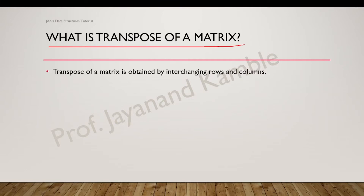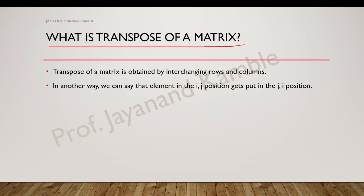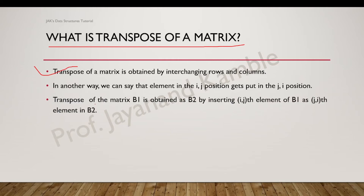Before that we must understand what is meant by the transpose of a matrix. A transpose is obtained by interchanging rows and columns. In other words, the element at position i,j gets placed at position j,i in the transpose. So rows and columns get interchanged. Transpose of matrix B1 is obtained as B2, by inserting the i,j-th element of B1 as the j,i-th element of B2.